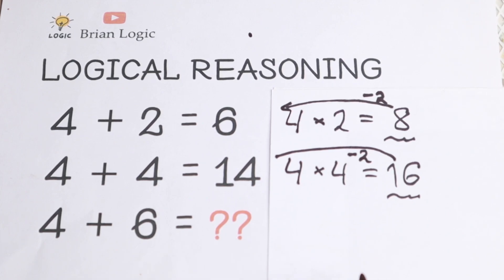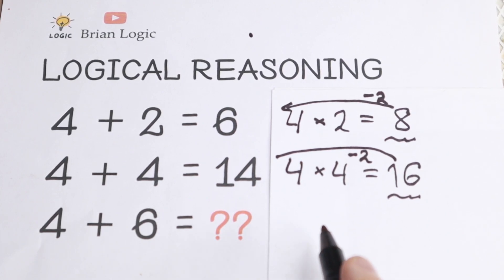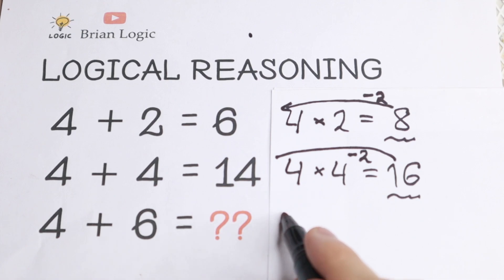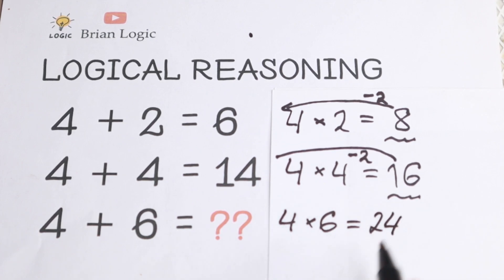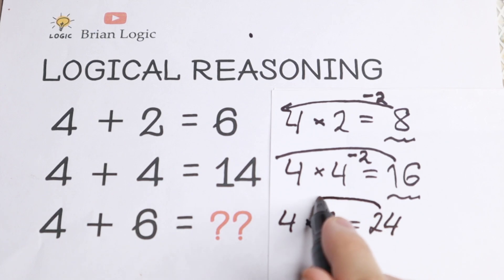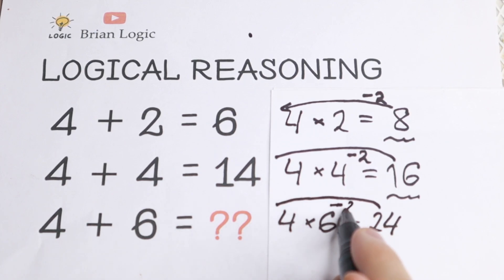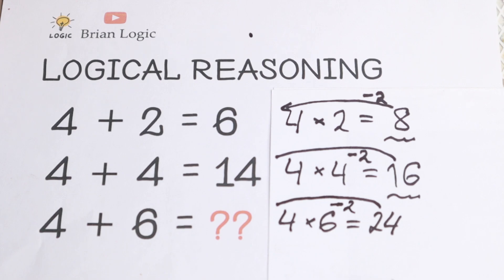But let's check our logic. So firstly we multiply it, we have 4 times 6. If we multiply it, we have 4 times 6, we have 24. But in our case we subtract 2. So from here we need to subtract 2. So 24 minus 2, we have as a result 22.